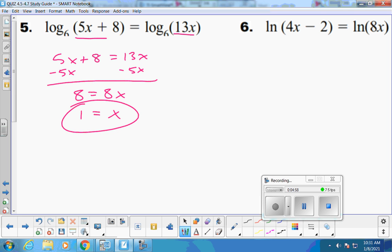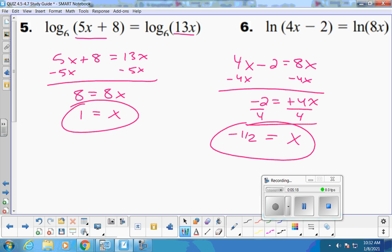All right. My board buddies groups set these two equal, brought the 4x over, and that gave them 4x equals negative 2, and divided, oh wait, positive 4x equals negative 5, divided both sides by 4, and got negative 1 half. So that's a great job on that one.